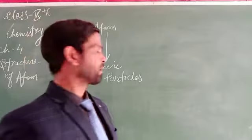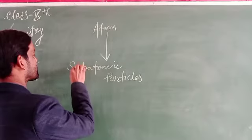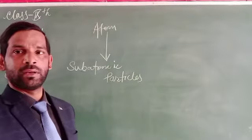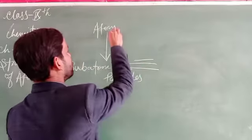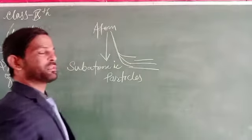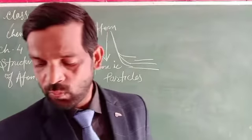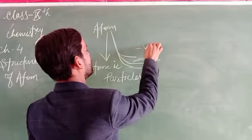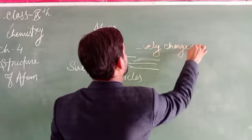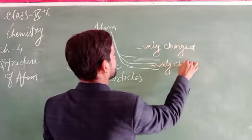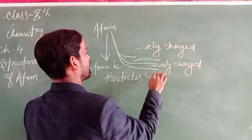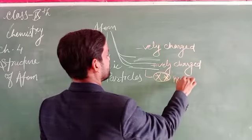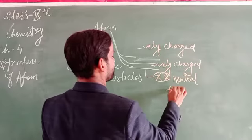These sub-atomic particles are the further units of the atom. We suppose there are three things by which the atom is composed. These three particles are: one is negatively charged, the second is positively charged, and the last one is neither negative nor positive — that means it has a neutral charge.